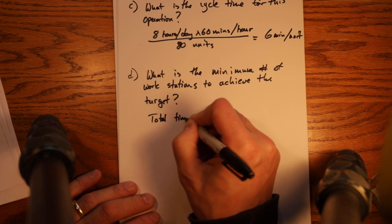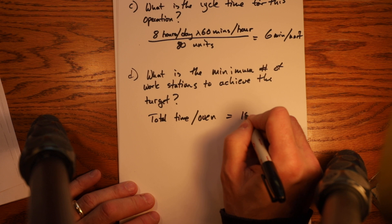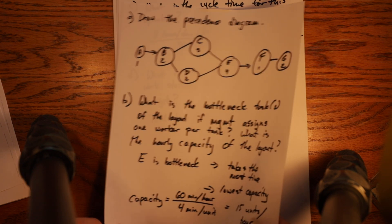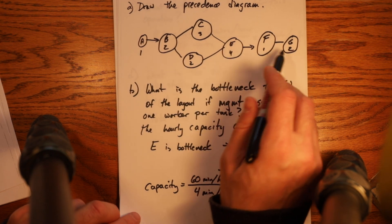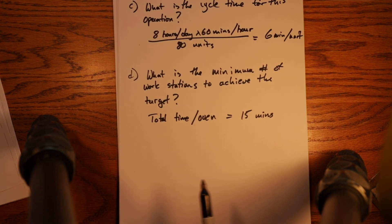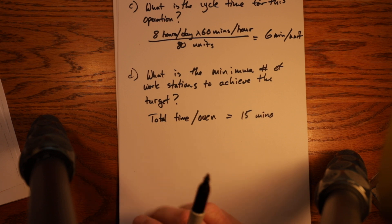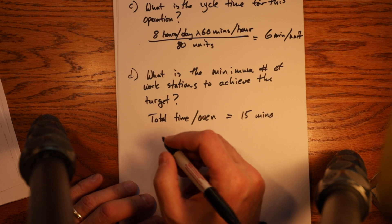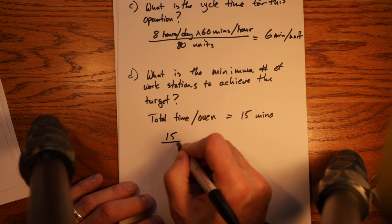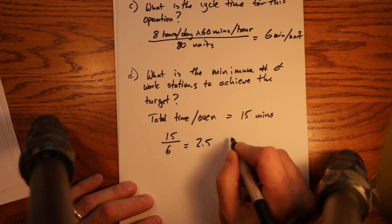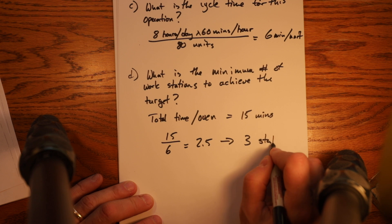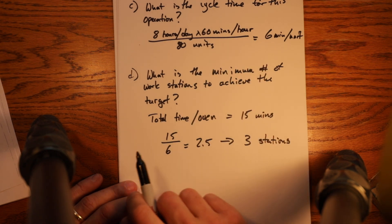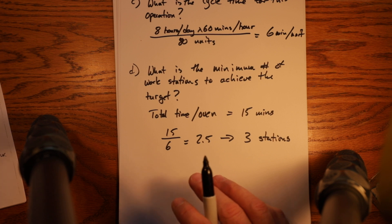So then the total time per oven is equal to 15 minutes, which is simply the total of the individual times, 1 plus 2 plus 3 plus 2 plus 4 plus 1 plus 2. So that is the total manufacturing time per unit. Because we've got workstations, we can get it down to this 6 minutes per unit, but the total amount of time is 15. So the minimum number of workstations is equal to 15 divided by 6 is equal to 2.5. So the minimum number of workstations is 3 stations. We need in order to do this 15 minutes of manufacturing and get one out every 6 minutes, we need a minimum of 3 stations to get that done.